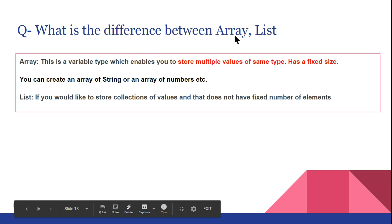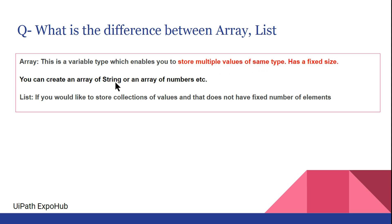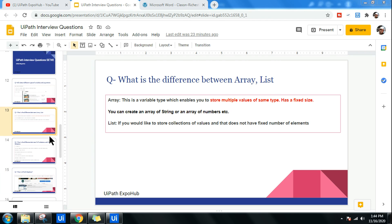The next question: what is the difference between array and list? An array is a variable type that enables you to store multiple values of the same type with a fixed size. If you need to store five values, you set it to five and it stays that size. A list is similar to an array but dynamic — it collects values without a fixed number of elements, so use it when you don't know how many values you'll have.